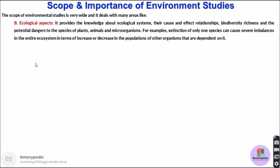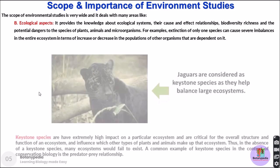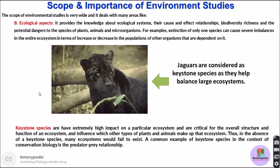Another domain in environmental studies deals with ecological aspects. This domain provides knowledge about ecological systems and their cause-and-effect relationships. It also provides knowledge about the biodiversity richness of particular areas and the potential dangers to species of plants, animals, and microorganisms. For example, the extinction of one species can cause severe imbalances in the entire ecosystem in terms of increases or decreases in populations of other dependent organisms.